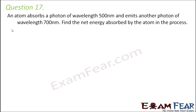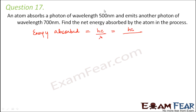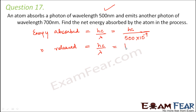Question number 17: An atom absorbs a photon of wavelength 500 nm and emits another photon of wavelength 700 nm. Find the net energy absorbed by the atom. Energy absorbed equals hc divided by 500 × 10⁻⁹ meters, and energy released equals hc divided by 700 × 10⁻⁹ meters. Since the numerator hc is the same for both, the smaller denominator gives larger energy, so energy absorbed is greater than energy released — meaning there is net energy absorption.